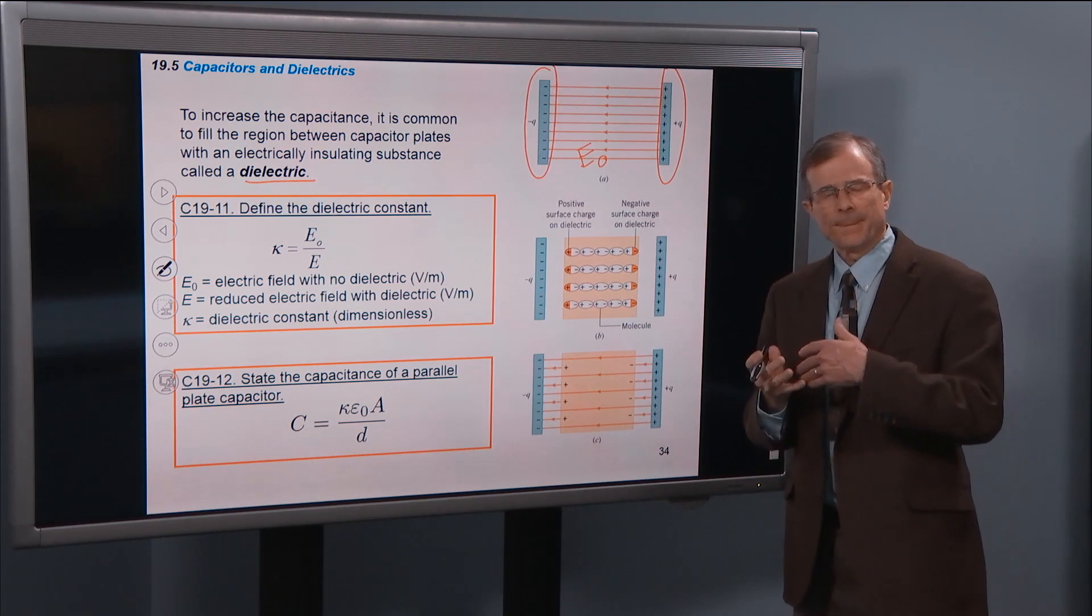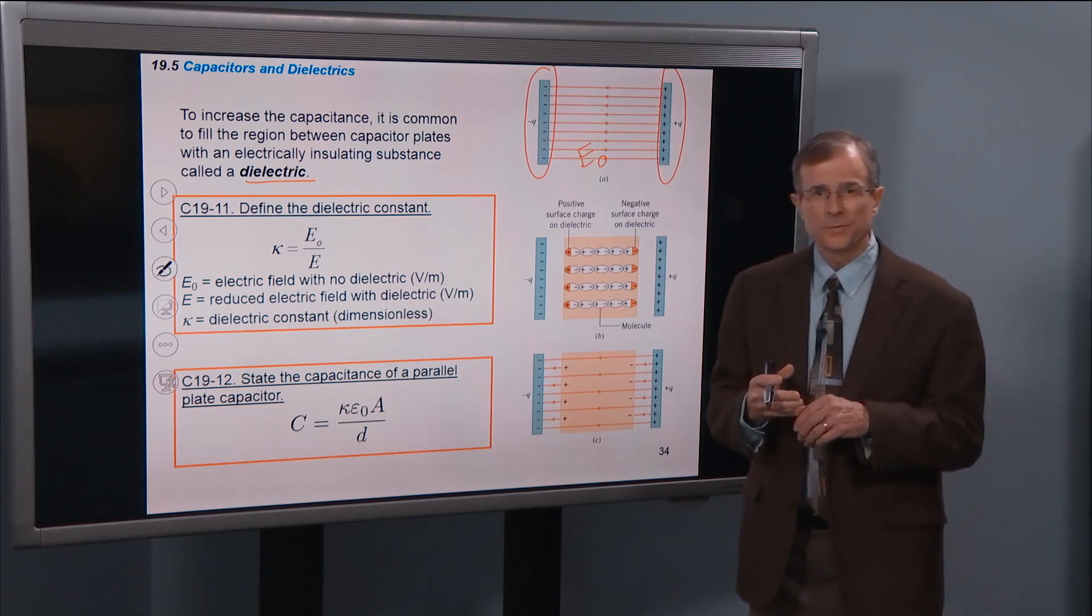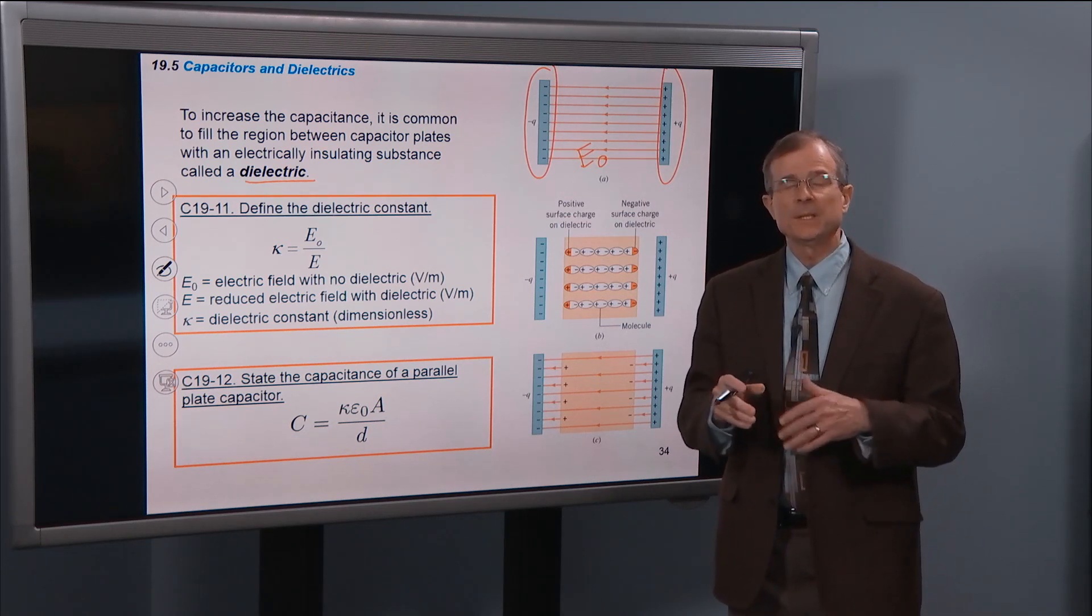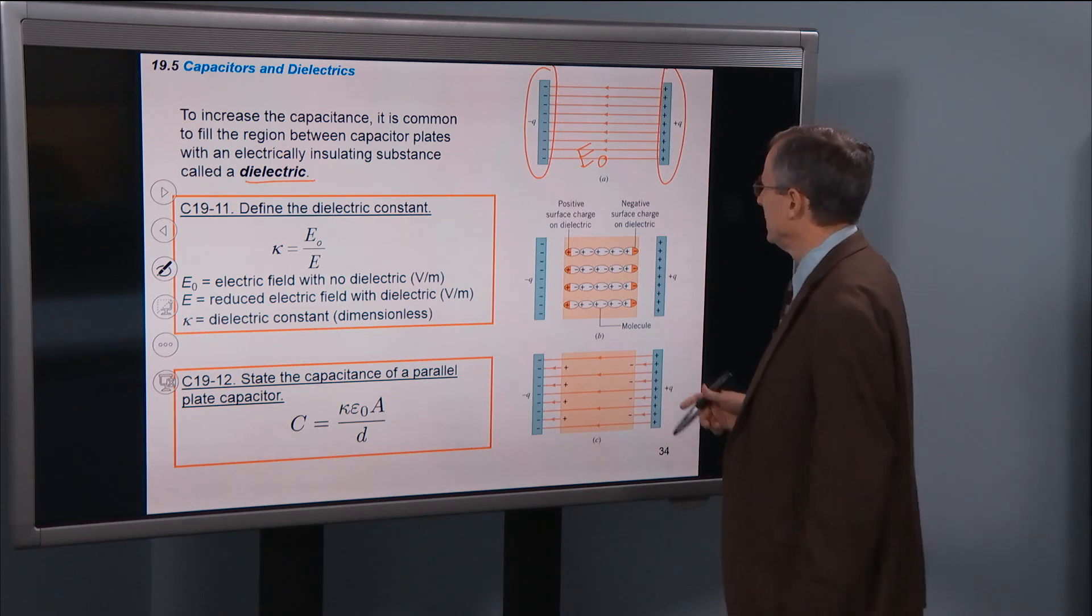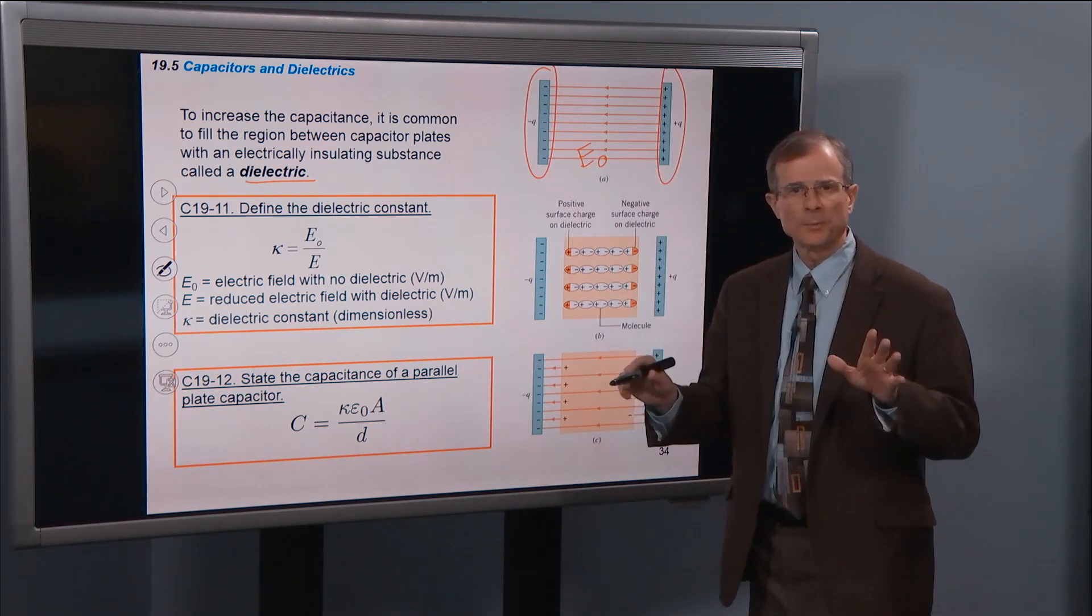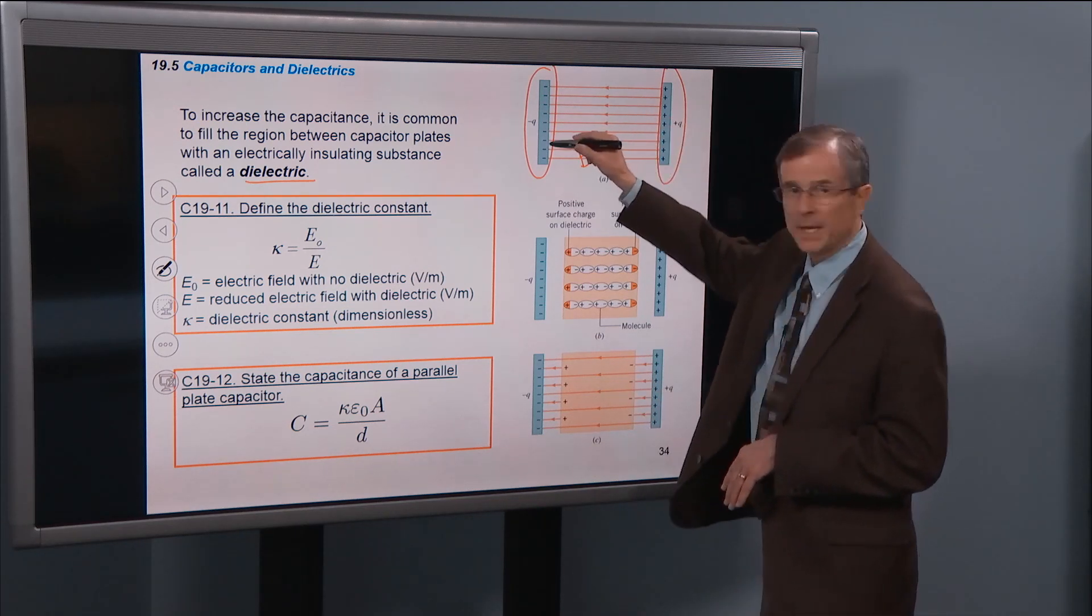Now, air is very, very close to having a, being the same as having no dielectric in place. And we'll talk a little bit more about that. So this is the electric field that would exist. And this is exactly what we've talked about in the last two chapters. The electric field that goes from the positive to the negative.